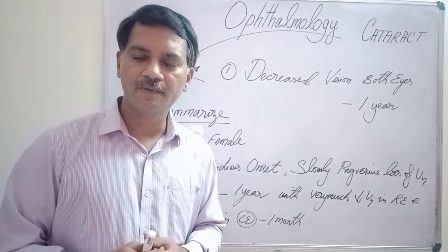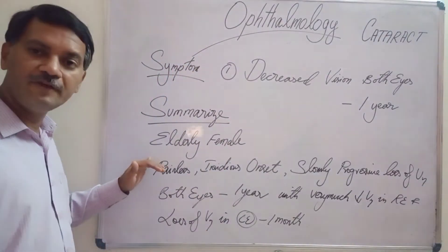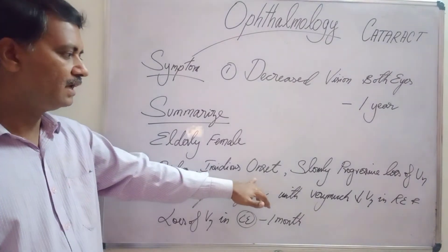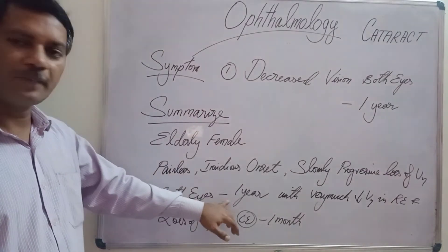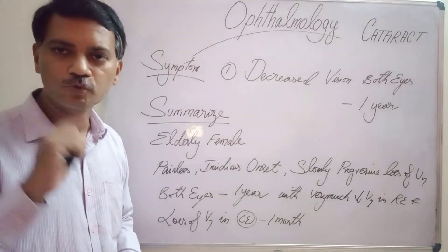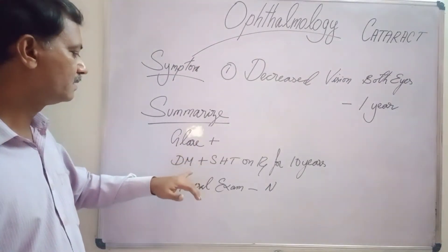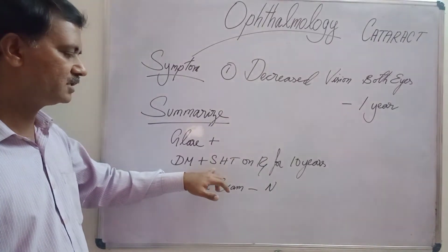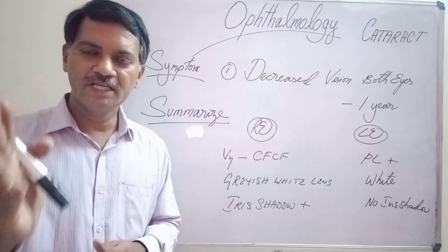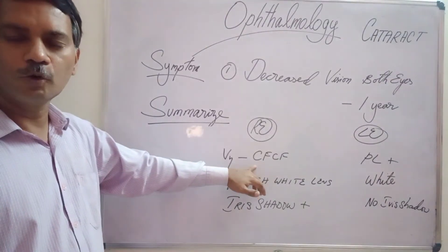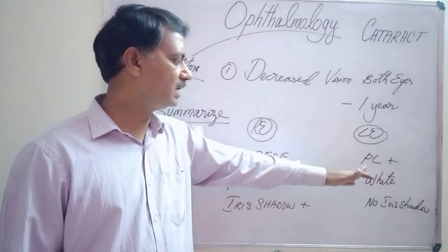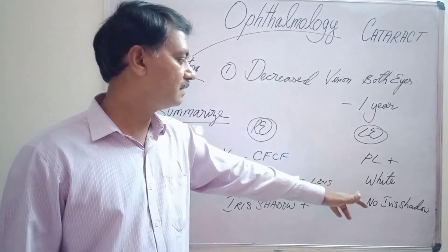Before going to the diagnosis, I summarized this case: an elderly female presenting with painless, insidious onset, slowly progressive loss of vision in both eyes for the past one year — very much decreased vision in the right eye, and loss of vision in the left eye for the past one month. The patient had glare in both eyes. She is a known diabetic and systemic hypertensive on treatment for 10 years. Right eye showed visual acuity of counting fingers close to face, greyish-white lens, iris shadow present. Left eye showed only perception of light, whitish lens, no iris shadow.